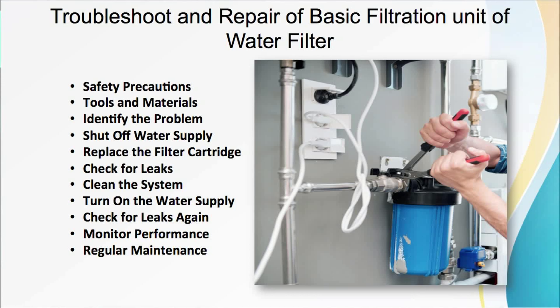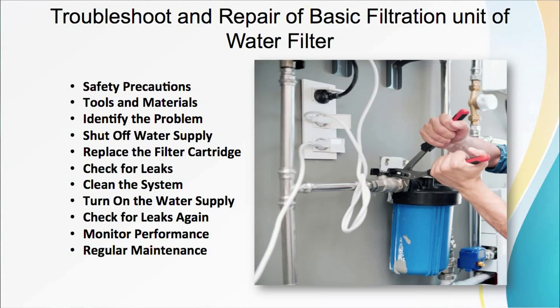As part of troubleshooting, first is identify the problem. Determine the specific issue with your water purifier. Common problems include leaks, reduced water flow, or strange odors or taste. Then the second step is to shut off the water supply — turn off the water supply to the filtration unit to prevent any further water from entering the system. Third is replace the filter cartridge. If the primary issue is a reduction in water flow or a change in water quality, it may be time to replace the filter cartridge.